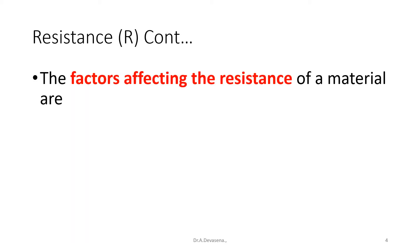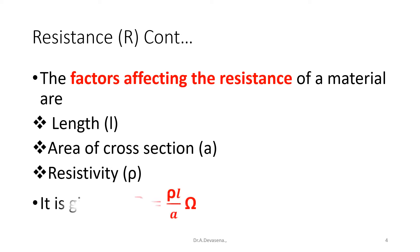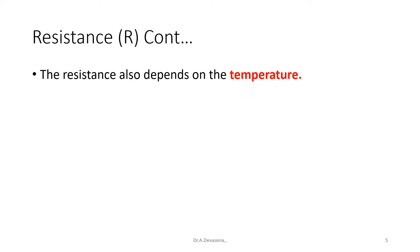Now we see the factors affecting the resistance of a material. The factors affecting the resistance of the material are: first one, length (small l), area of cross section (small a), resistivity (rho). So it is given by R is equal to rho L divided by A ohms. The resistance also depends on the temperature.